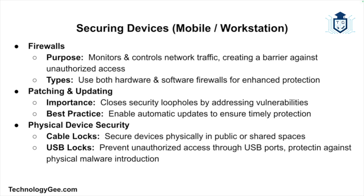Both hardware and software firewalls can protect workstations and mobile devices. Then we have patching and updating — patching software and operating systems is critical to closing security loopholes. Vendors release patches to address vulnerabilities, so make sure automatic updates are enabled to stay protected. Physical security is as important as digital security, and key practices include implementing devices like cable locks, which can secure laptops and workstations physically, especially in public places like libraries or offices.